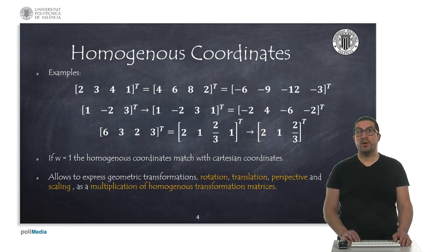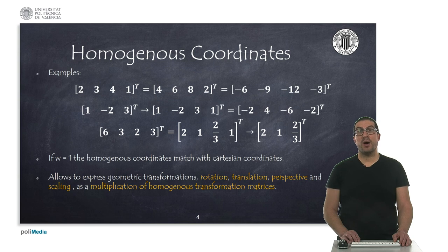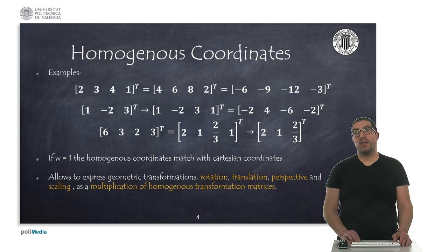As observed, if the scale is unitary, then the three first coordinates are the same as the Cartesian ones. The advantage of working with homogeneous coordinates is that this representation allows us to work with geometric transformations by simply multiplying matrices. We can perform operations such as translation, rotation, change of perspective, or scaling — all under the same concept using basic algebraic operations.